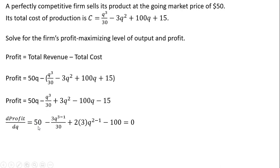Now we're going to take the derivative of the profit function with respect to the quantity of output, Q. The derivative of 50Q is 50. For the next term, we bring down the 3 in front and subtract 1 from the exponent. The derivative of 3Q squared: we bring down the 2 in front and subtract 1 from the exponent. The derivative of minus 100Q is minus 100, and the derivative of minus 15 is just 0.